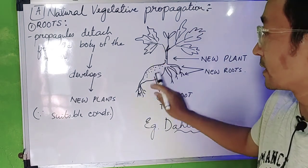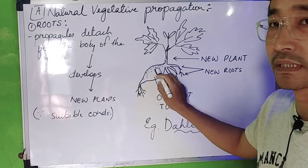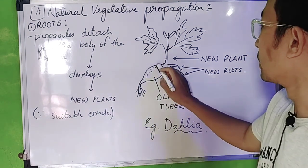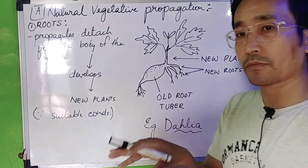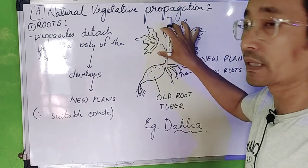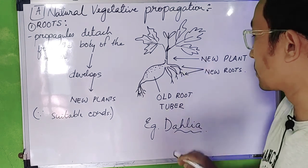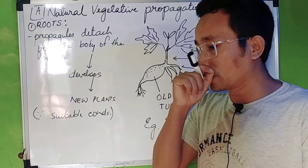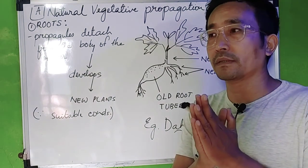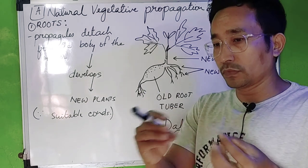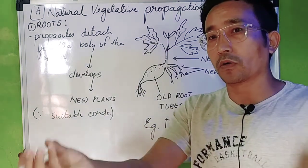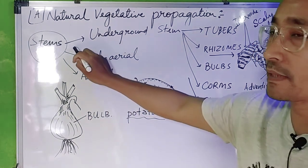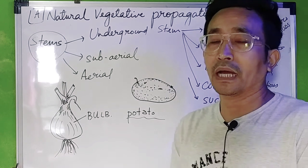For example, Dahlia — all root tubers are old root tubers, so it will become a new plant with new roots. The root tubers of Dahlia grow as underground storage structures. This is a root on the underground stage.